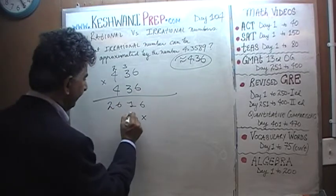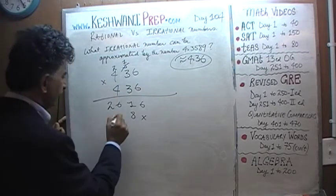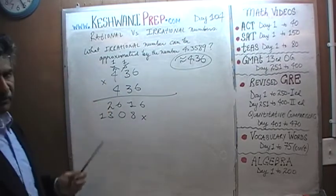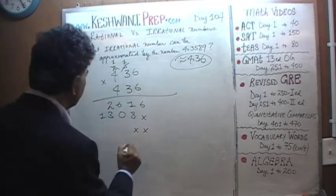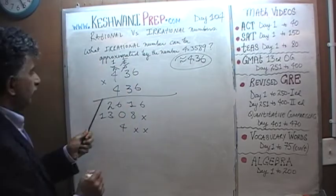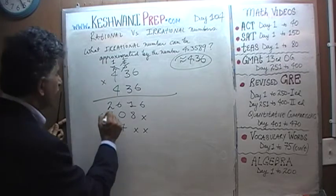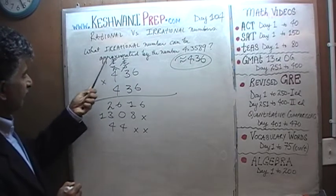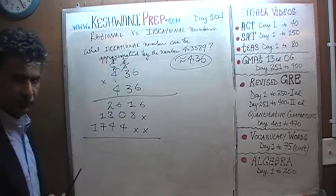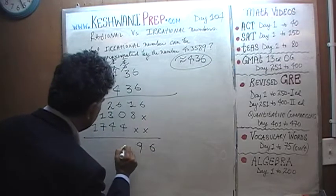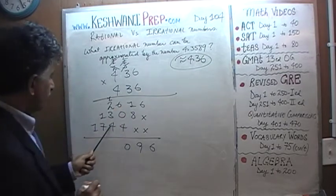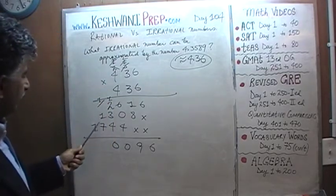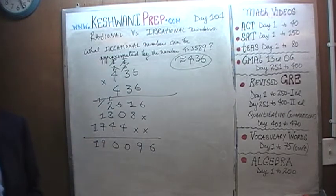Times 3: 3 times 6 is 18 — write 8, carry 1. 3 times 3 is 9 plus 1 is 10 — write 0, carry 1. 3 times 4 is 12 plus 1 is 13. Cross out previous carry numbers so you have fresh ones on top. Times 4: 4 times 6 is 24 — write 4, carry 2. 4 times 3 is 12 plus 2 is 14 — write 4, carry 1. 4 times 4 is 16 plus 1 is 17. Adding it all up, we get 19.0096.